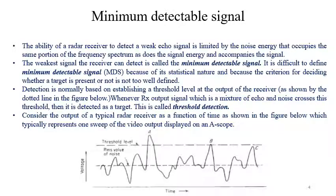First, consider the minimum detectable signal. The ability of a radar receiver to detect a weak echo signal is limited by the noise energy that occupies the same portion of the frequency spectrum as the signal energy. The weakest signal the receiver can detect is the minimum detectable signal. It is difficult to define S_min because of its statistical nature, since the criterion for deciding whether a target is present or not is not too well defined. Detection is normally based on establishing a threshold level at the output of the receiver — this is called threshold detection.